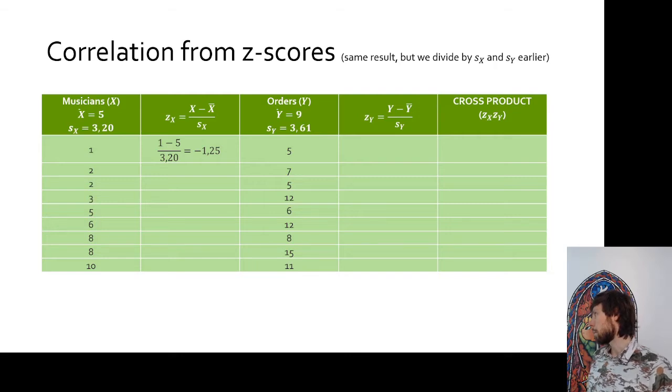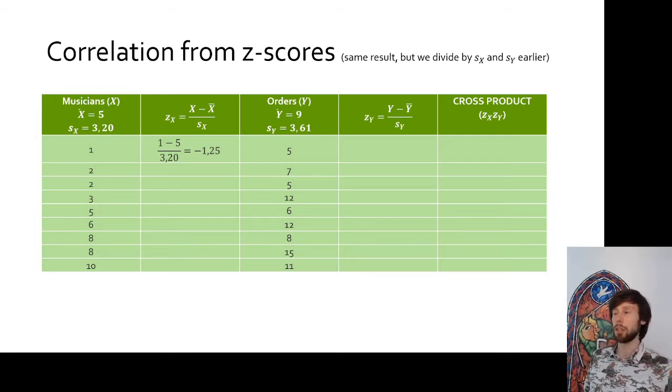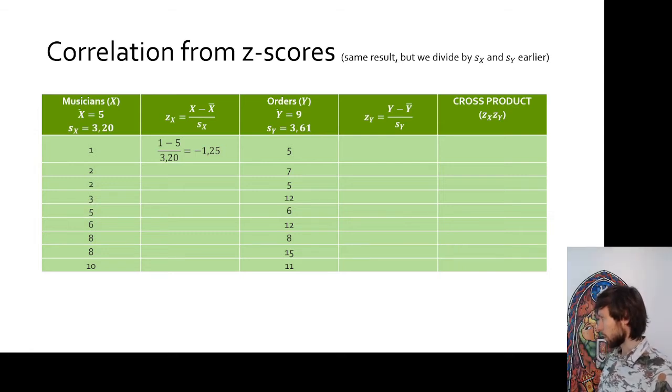Indeed. What we see is that the first cook had one single musician to listen to during their work shift. That's a bit less than the average. That's actually the first thing we do when we compute a z-score. We see how far away the score is from the mean. 1 minus 5. Looks like we are 4 below the mean. 4 musicians below the mean. And then we compare this to the standard deviation.